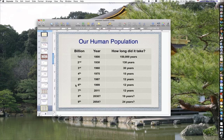So Homo sapiens had been walking the Earth for 150,000 years approximately, and it took that 150,000 years to reach our first billion in the year 1800. And then we had our second billion in 1930, that was 130 years later.